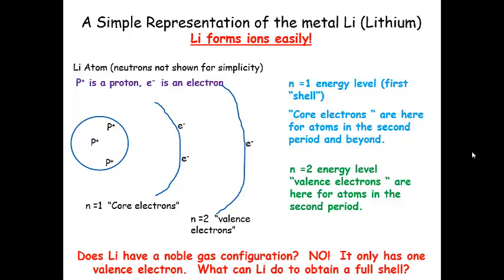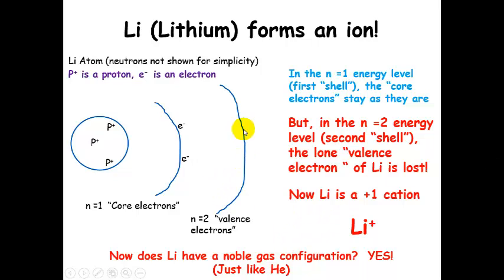It wants either 8 right here or 2 only and get rid of that guy. Now, it turns out that it's much, much, much more favorable for this electron to just go away, leaving this full shell configuration that looks like helium, which is a noble gas. So lithium is going to lose that electron, so it'll go somewhere else. Maybe some other atom in the compound will go somewhere else.